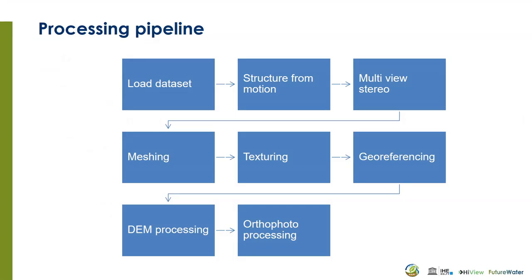While OpenDroneMap is processing our drone images, I will present the processing pipeline that is happening now. So we have loaded the data set. Then it will determine the structure from motion. It will get the multi-view stereo. Then it will create the mesh. It will apply textures to the mesh. It will georeference the images. Then it can process the digital elevation model. And finally it can create the orthophoto. I will explain each step in detail.